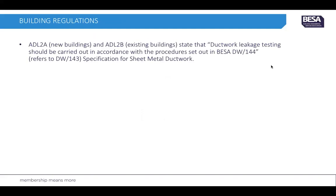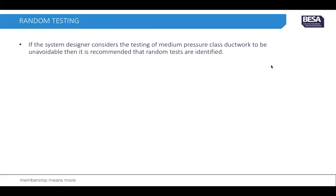Regarding UK Building Regulations, ADL2A for new buildings and ADL2B for existing buildings both state that leakage testing should be carried out in accordance with procedures set out in the HVCA DW144 document for sheet metal ductwork, and DW144 refers to DW143.